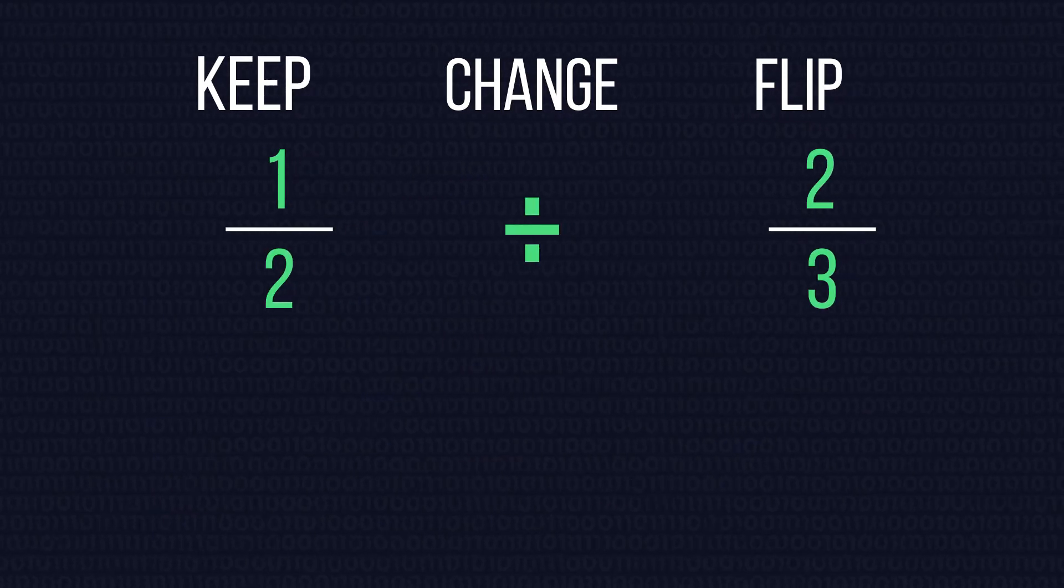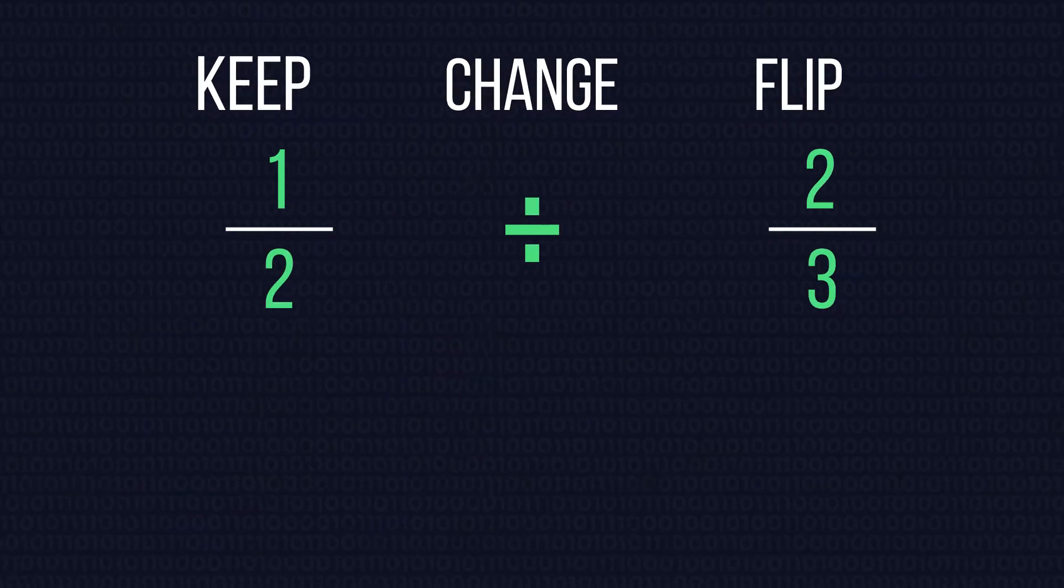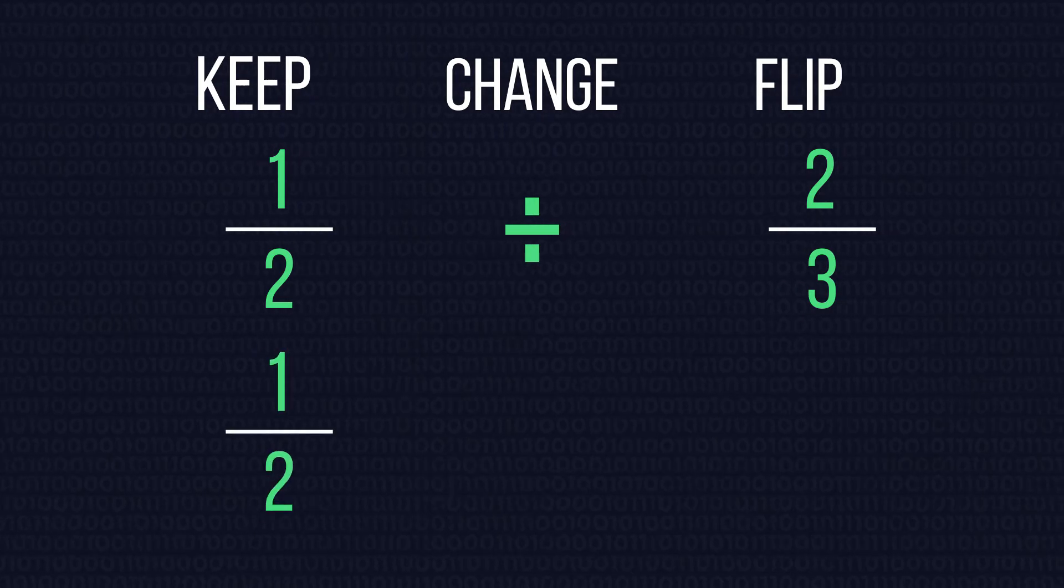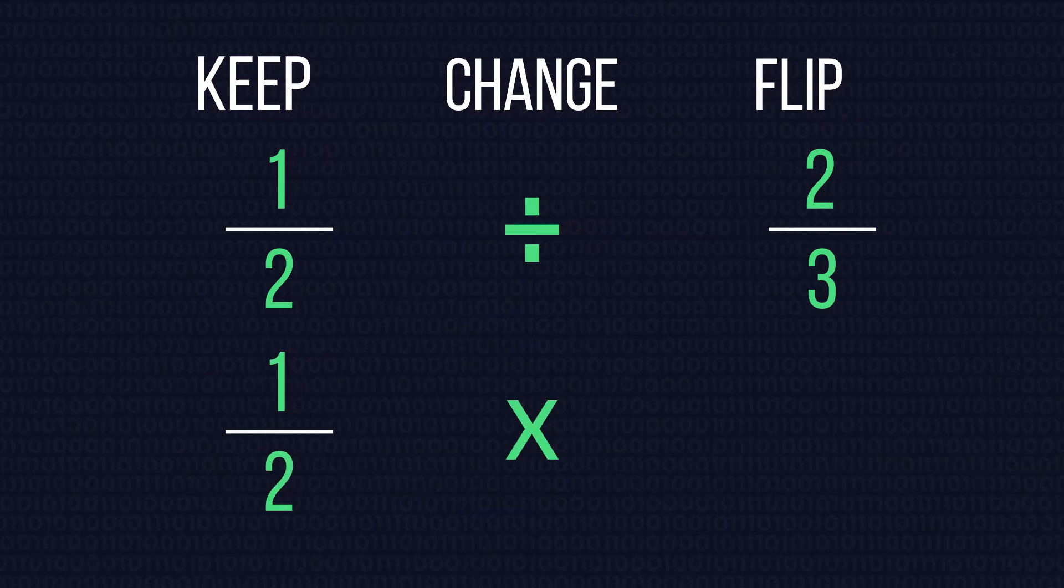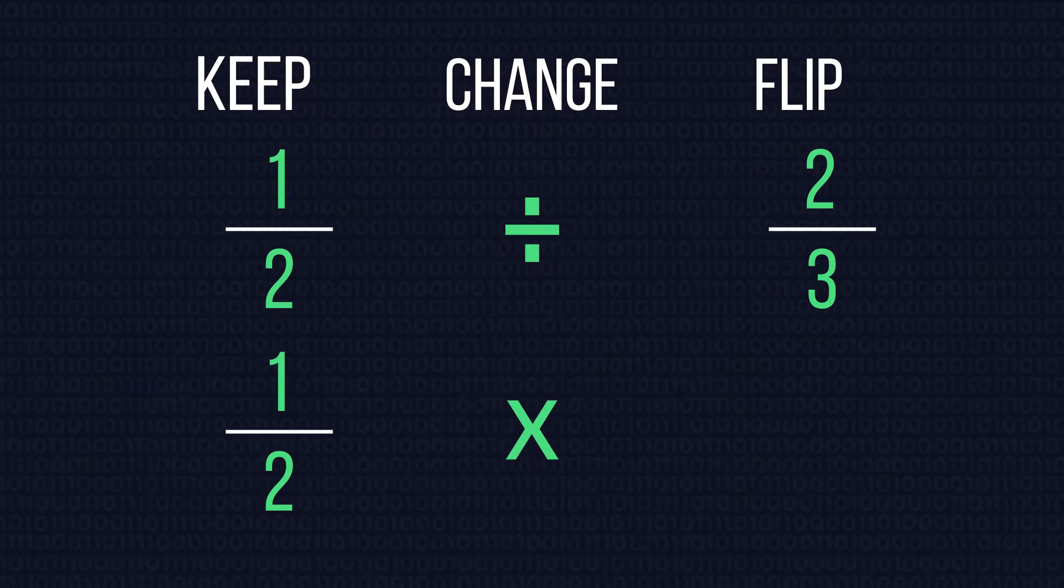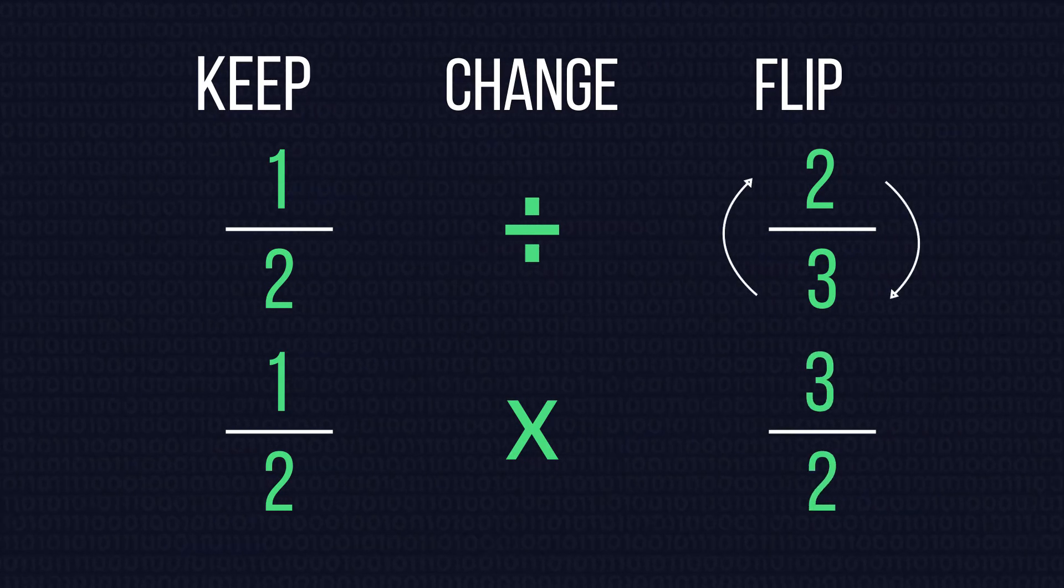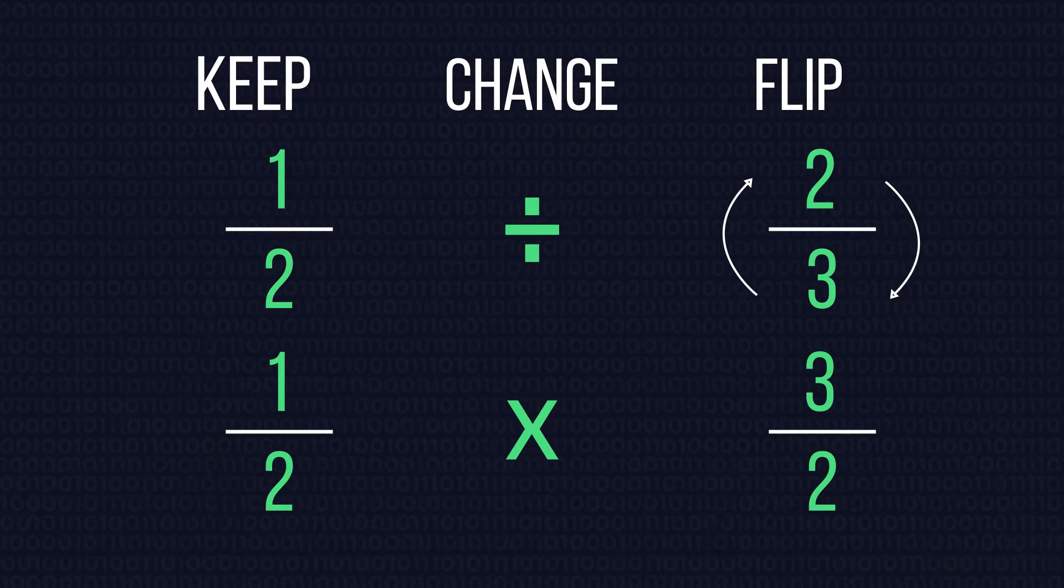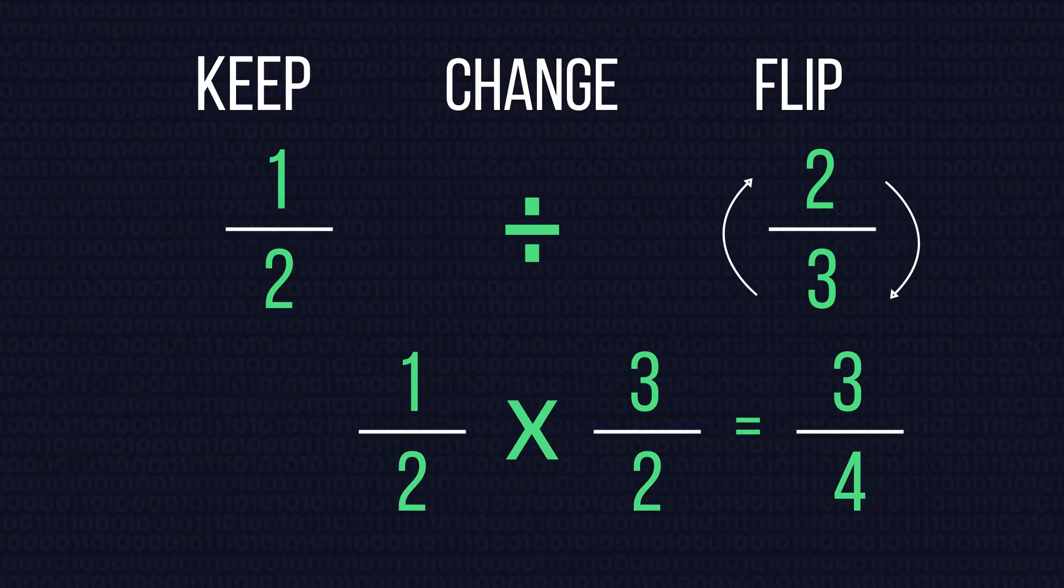So, to divide, we use KeepChangeFlip. This means that we keep the first fraction the same. We change the divide symbol for a multiplication symbol, and we flip the second fraction upside down. We then multiply the fractions together as before.